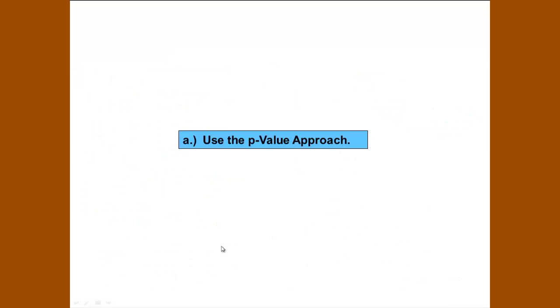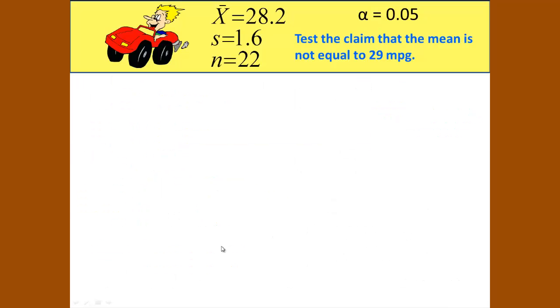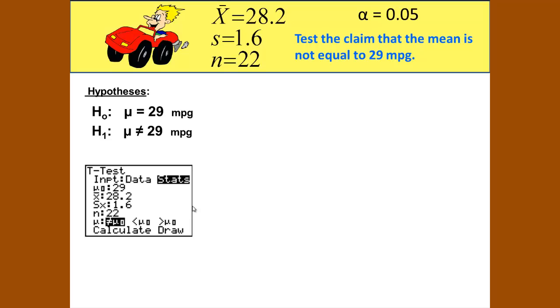Now let's try the p-value approach. Since we do not have the data in the calculator, we will need to input the statistics. We do not have raw data. The hypotheses are the same as what we had before. H0 is that the mean is equal to 29 miles per gallon, and H1, the alternate, is that mu is not equal to 29 miles per gallon. For our t-test, remember that your input will be the statistics, the stats.